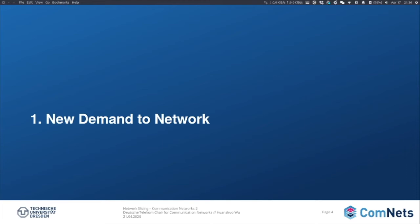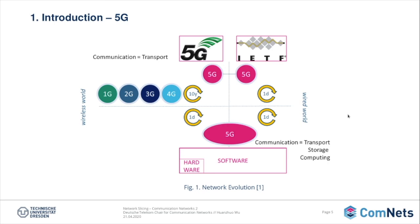Now let's go to the first part: New Demand to Network. You have already learned the evolution history of wireless networks in the previous lectures. Nowadays, we are getting closer to 5G networks. In contrast to previous networks, 5G is not only targeting services for humans — it also targets services for other physical objects, such as cars, wearable sensors, and so on, the so-called Internet of Things.